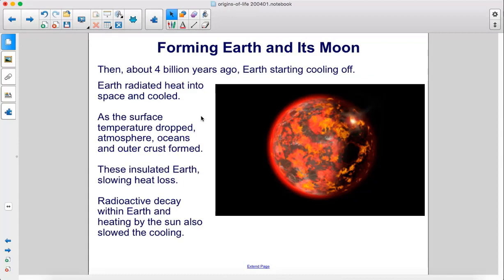Then, about 4 billion years ago, Earth started cooling off. Earth radiated heat into space and cooled. As the surface temperature dropped, atmosphere, oceans, and outer crust formed.